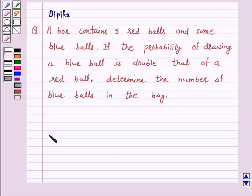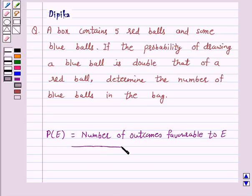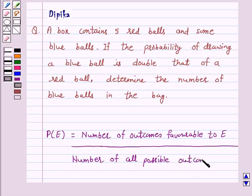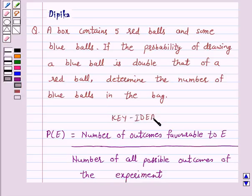We know that the probability of an event E is equal to number of outcomes favorable to E upon number of all possible outcomes of the experiment. So this is the key idea behind our question.